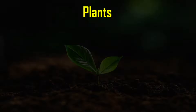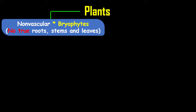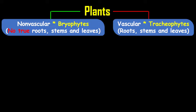Once you're going to group plants, plants are grouped into two broad categories. One is the nonvascular plants, and those are called bryophytes. Bryophytes have no true roots, no true stems, and no true leaves. The other category is the vascular plants, and vascular plants are called tracheophytes.